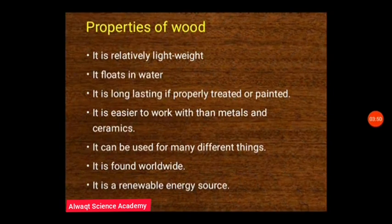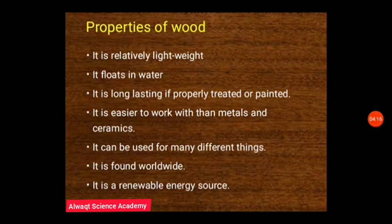The following are characteristics or properties of wood. Wood is relatively light in weight compared to metals or ceramics — wood is lighter. Wood floats in water, which is why it is the number one choice for making canoes, boats, and shelves, or any object meant to float on water. Wood is the first choice material for such objects.